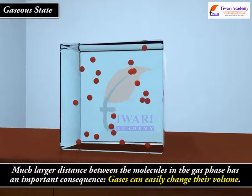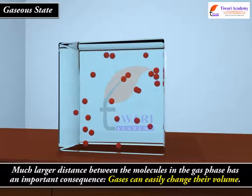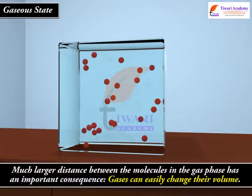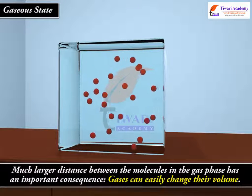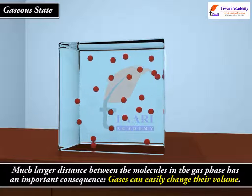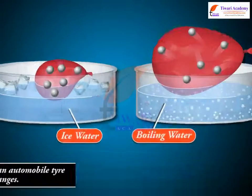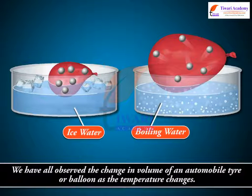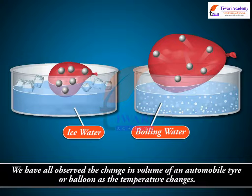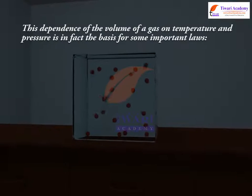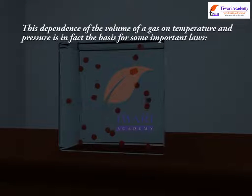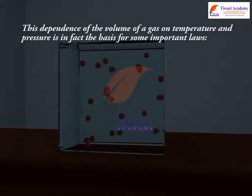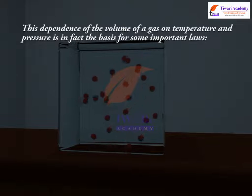This much larger distance between the molecules in the gas phase has an important consequence. Gases can easily change their volume. We have all observed the change in volume of an automobile tire or balloon as the temperature changes. This dependence of the volume of a gas on temperature and pressure is in fact the basis for some important laws.